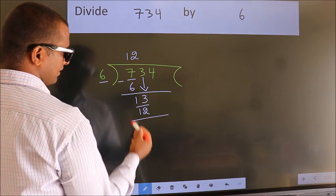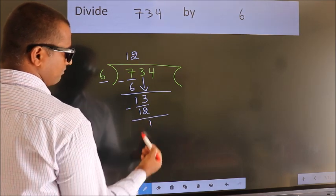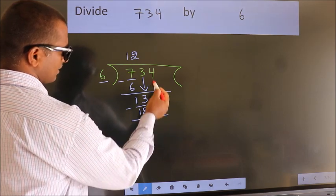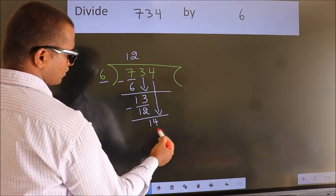Now we subtract. We get 1. After this, bring down the beside number. So 4 down. So 14.